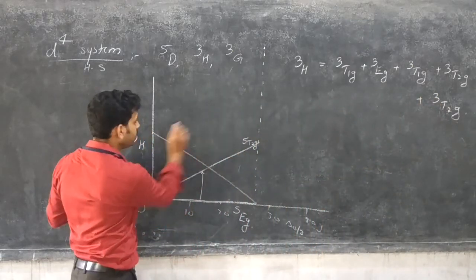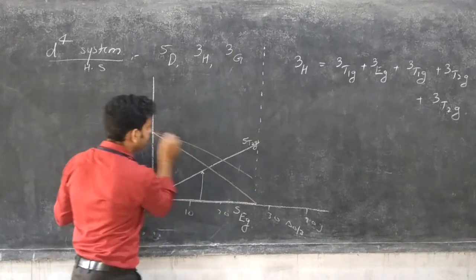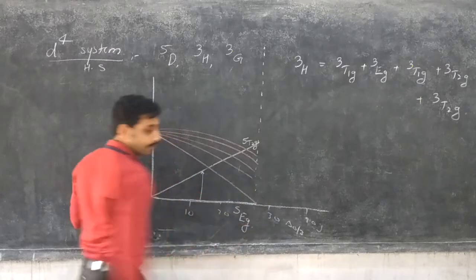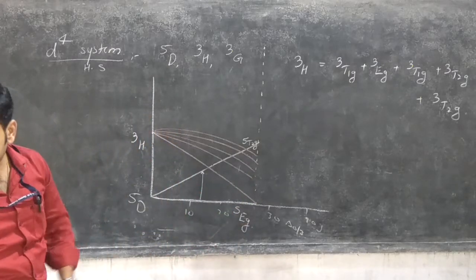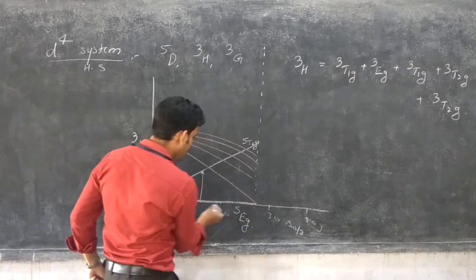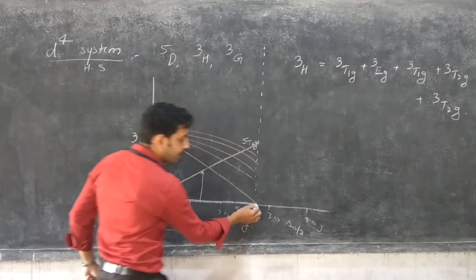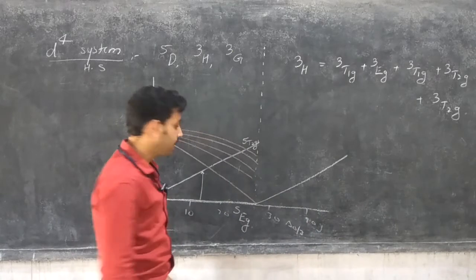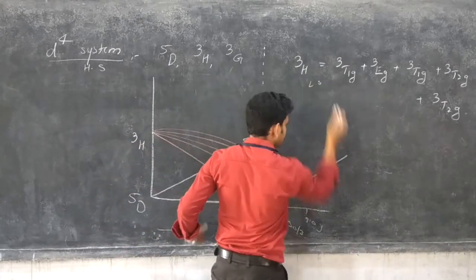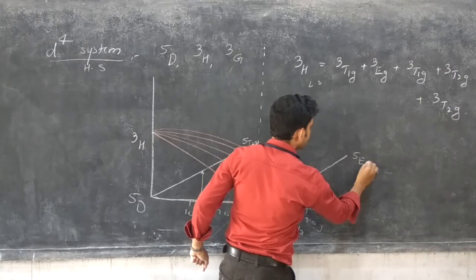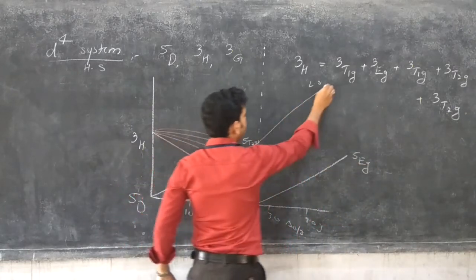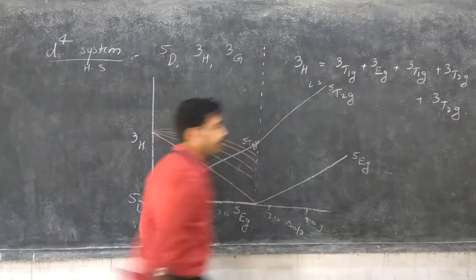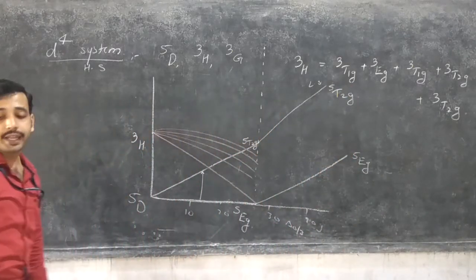The first, second, third, fourth, and fifth transitional lines are drawn in colored chalk. The lowest 5EG goes to a higher energy level in the case of low spin complexes, and 5T2G again increases to the 5T2G energy level.